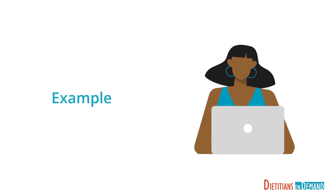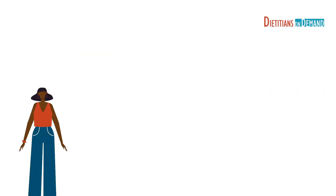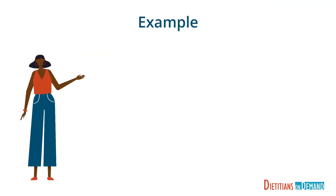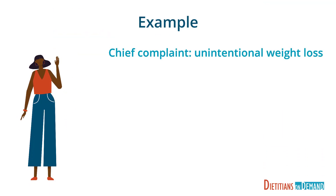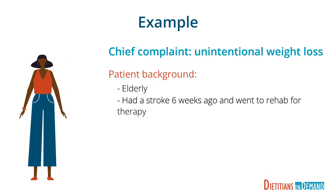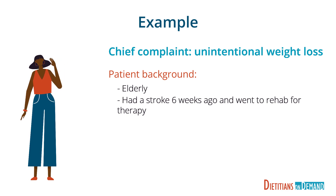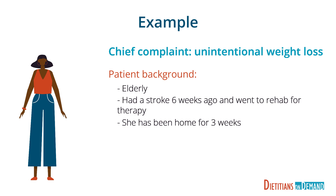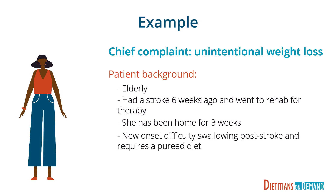Let's take a look at a few examples. Let's say we have a patient who presents with unintentional weight loss. She is elderly and you find out that she had a stroke about six weeks ago. She went to rehab for therapy and has been home now for about three weeks. After the stroke, she had new onset difficulty swallowing and has required a pureed diet.